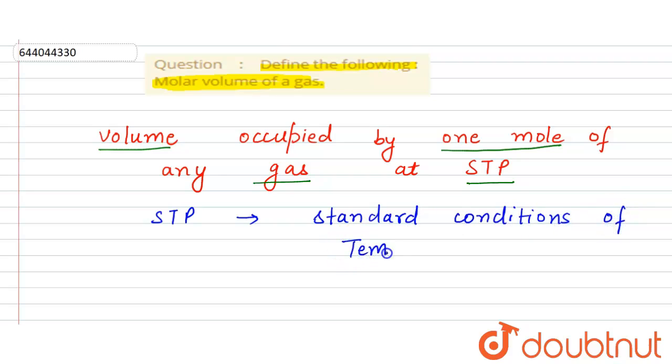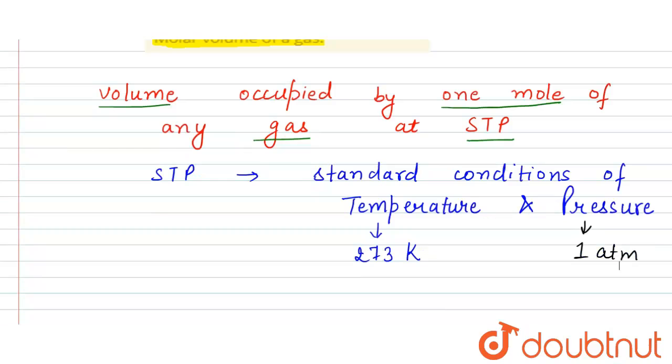Standard conditions of temperature and pressure. It means the standard conditions of temperature and pressure, and for this the temperature is 273 Kelvin and the pressure is one atmosphere.